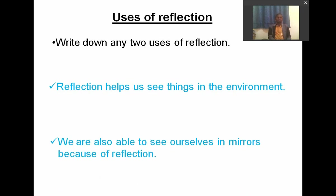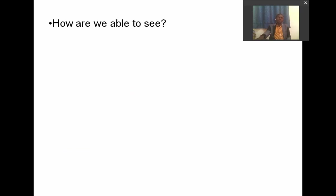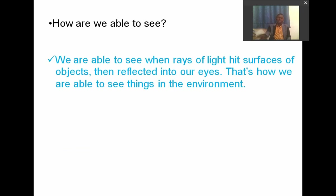We are also able to see ourselves in mirrors because of reflection. If there was no reflection, we would not be able to see ourselves in mirrors. We are able to see when rays of light hit surfaces of objects and are then reflected into our eyes. That is how we are able to see things in our environment.